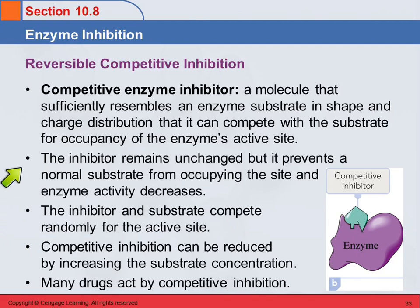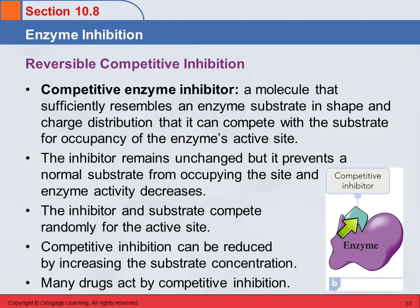The inhibitor is going to affect the rate of the reaction. It affects enzyme activity by blocking the active site — when the competitive inhibitor is in there, the substrate can't come in. The amount of substrate that gets catalyzed to product is going to be lower because there's competition for the active site. That's why it's called competitive inhibition.